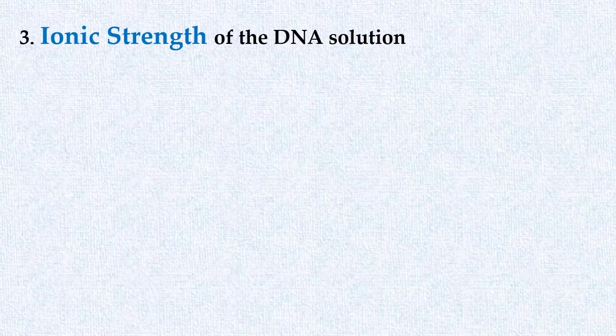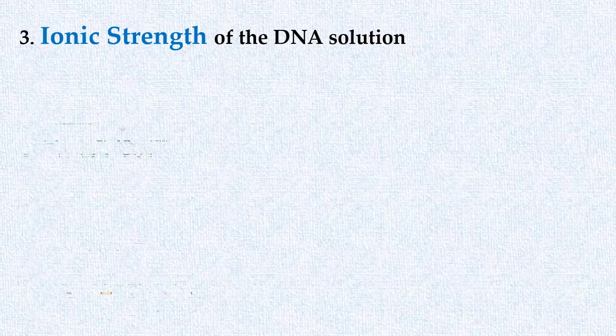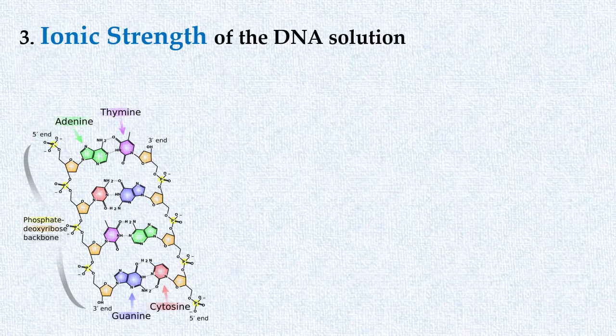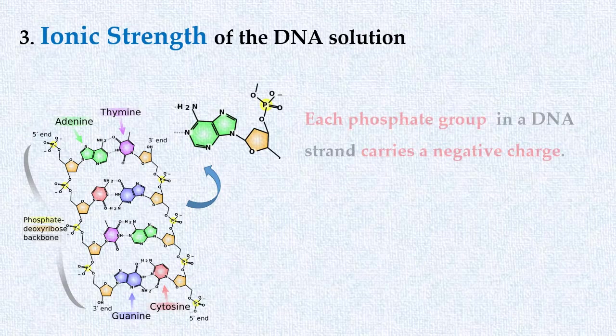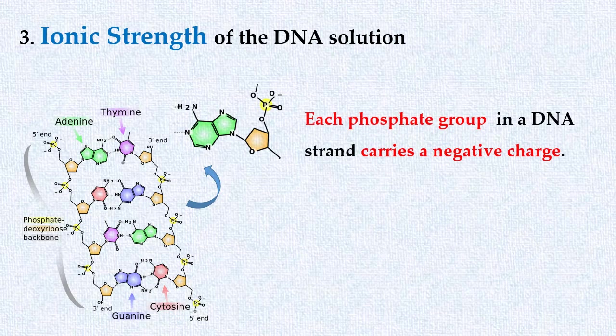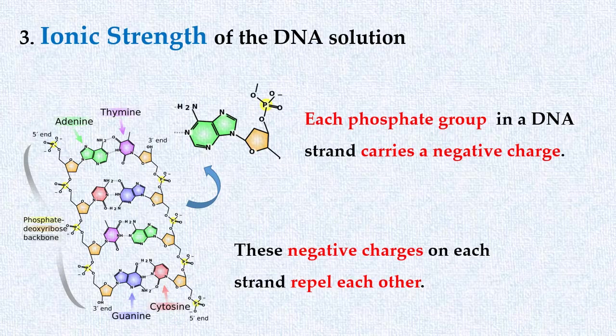The third factor affecting melting temperature of DNA is the ionic strength of the DNA solution. We know that backbone of a DNA helix is made up of sugar and phosphate, and each phosphate group in a DNA strand carries a negative charge. Thus overall, each strand of DNA molecule carries a negative charge. The negative charges on both DNA strands will repel each other.